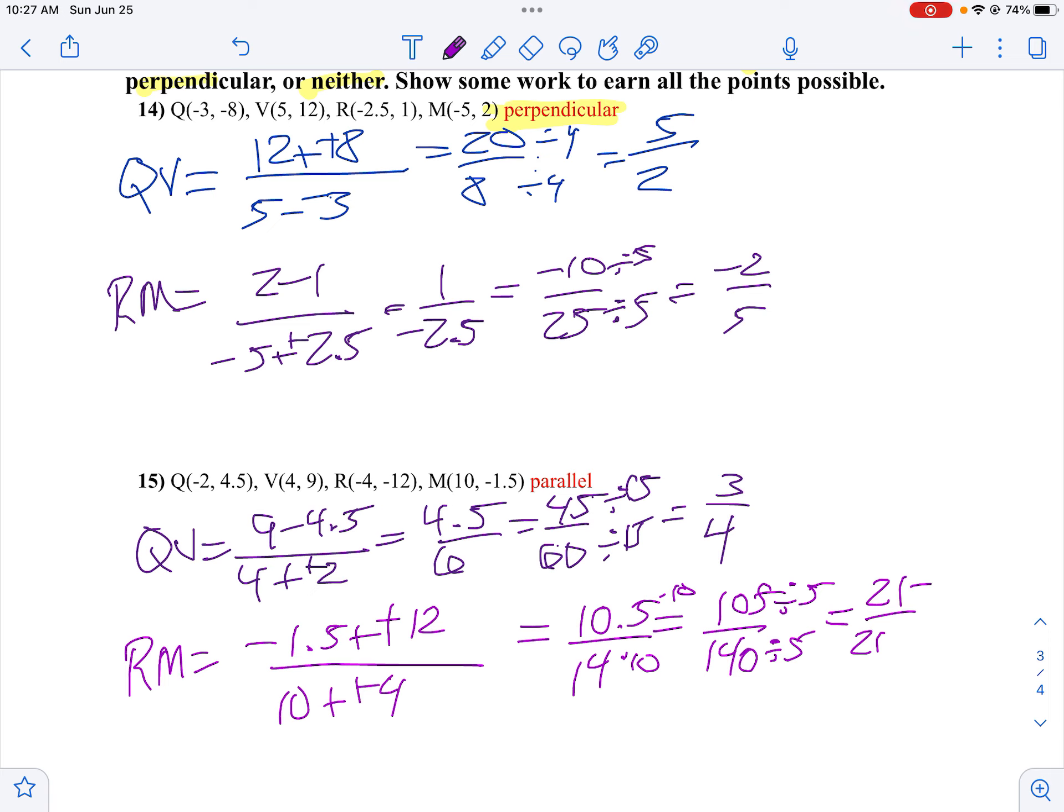Well, I could have divided by 35 if I would have been smart, but I didn't notice that. Oh, 28. I wrote 21. So 21 divided by 7 is 3. 28 divided by 7 is 4. Notice the lines have the same slope. So they're parallel.